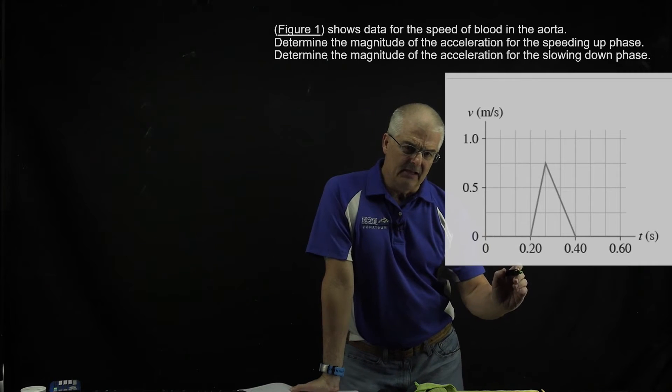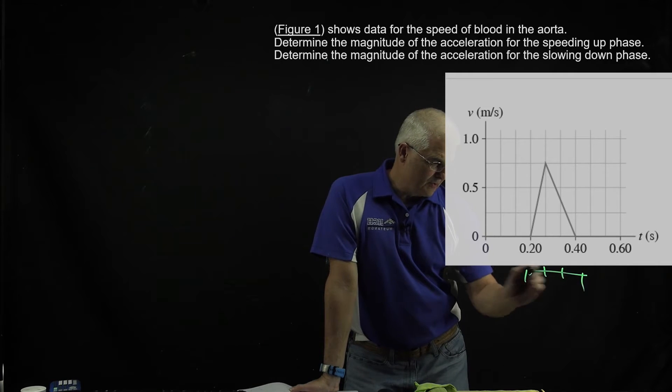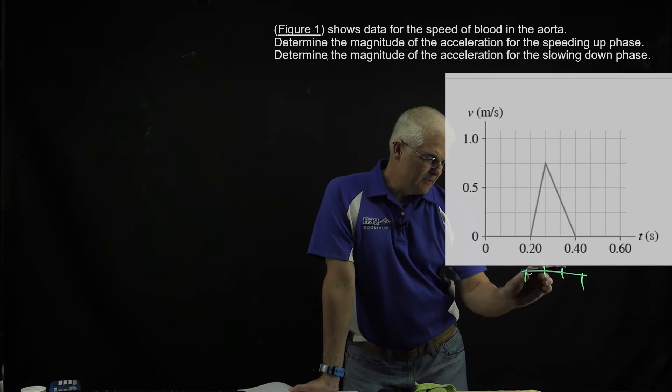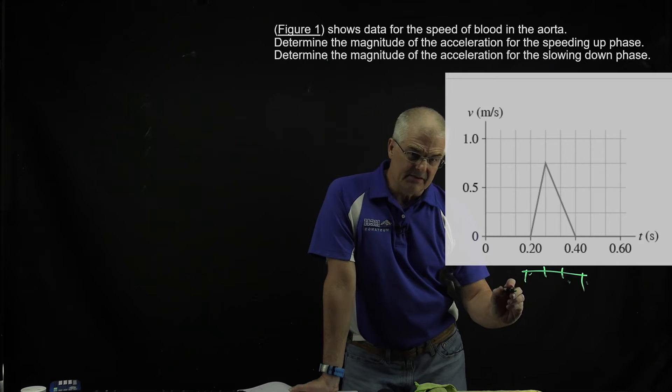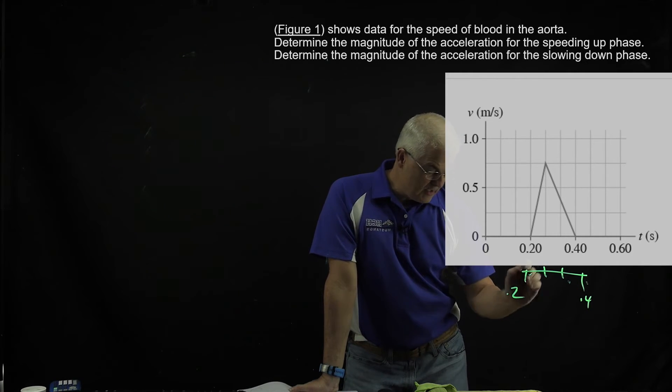Honestly, I don't like it in that from here to here, you've got three marks, right? That means there's three gaps, and this is 0.2, and this is 0.4. So what is each interval?